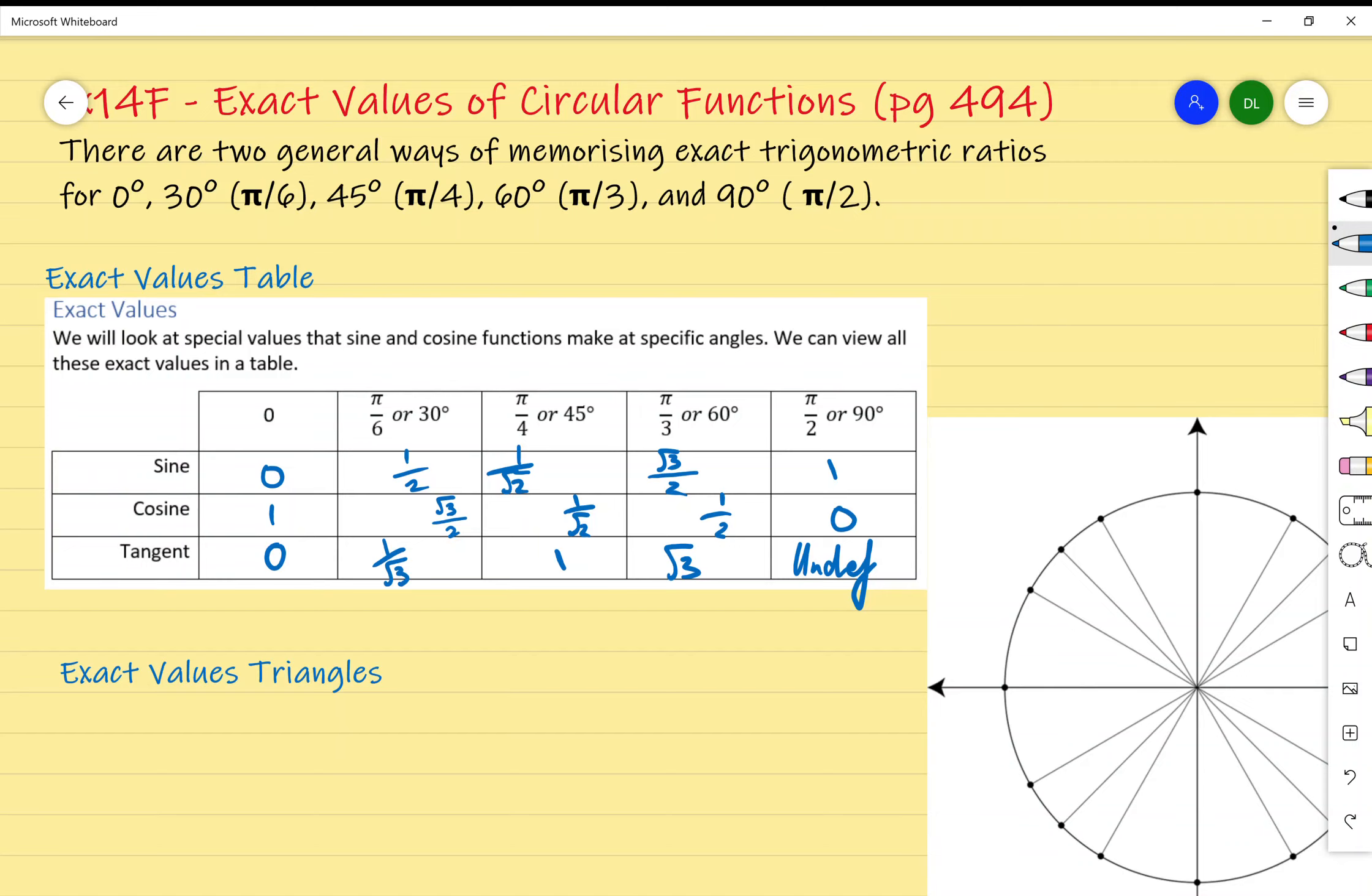For example, sine of π - we go all the way to π and look at what the y value is. But what happens if we're given an angle that isn't exactly 90 degrees or a multiple of 90 degrees? We use something called exact values tables or we use special triangles.